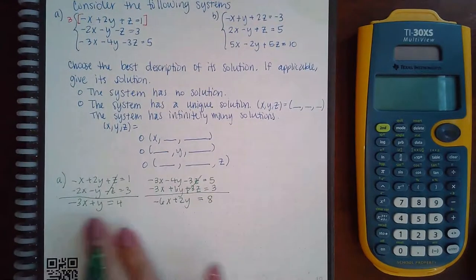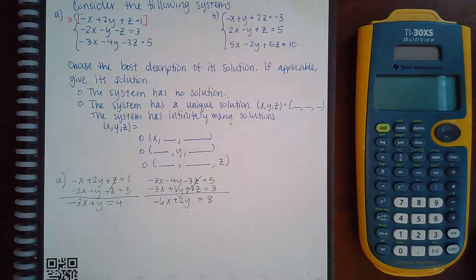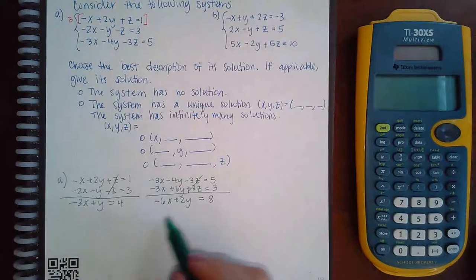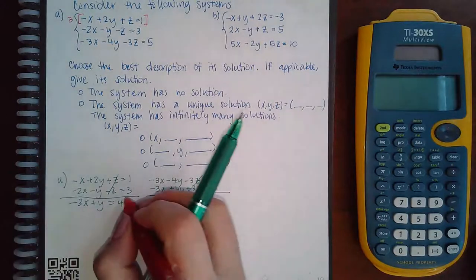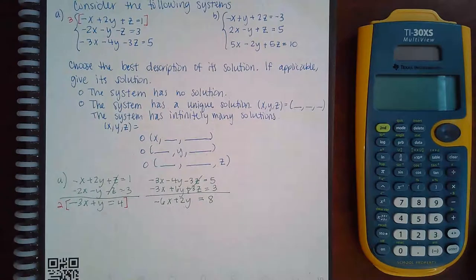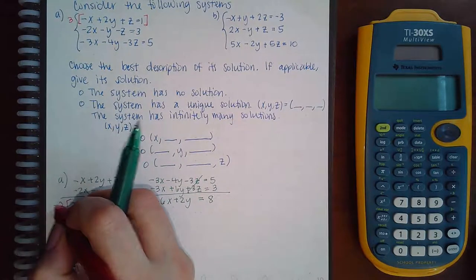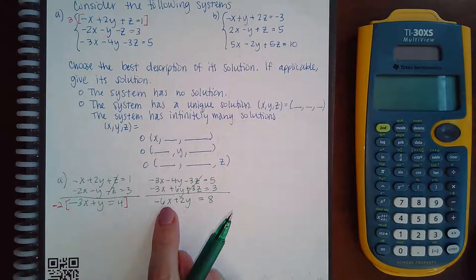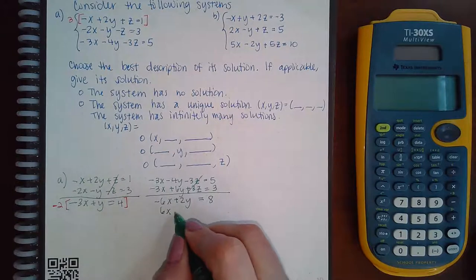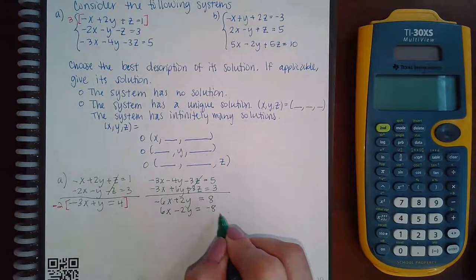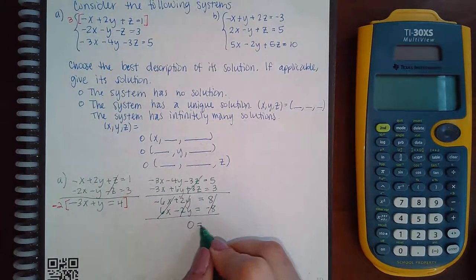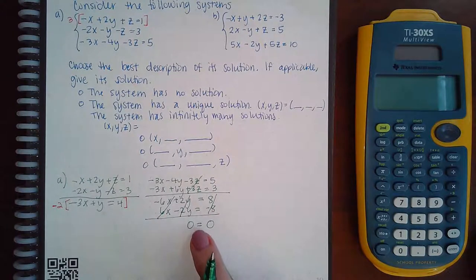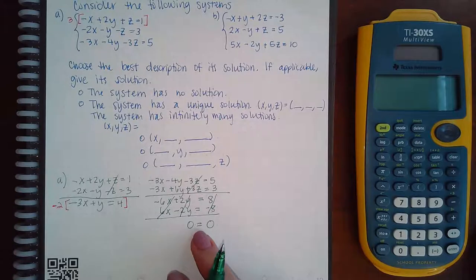Now I have to solve using those two resulting equations. To eliminate x, I need to multiply the first result by negative two to get positive six x, which will cancel the negative six x. That gives me positive six x minus two y minus eight. When I combine everything, it all cancels — nothing is left on either side. This is a true statement, which means I have infinitely many solutions.